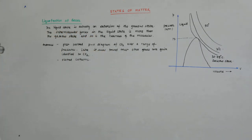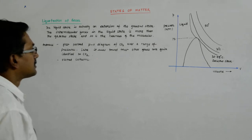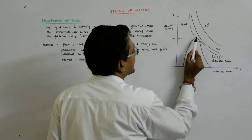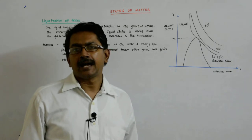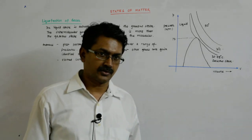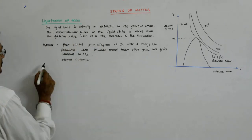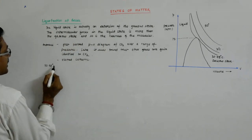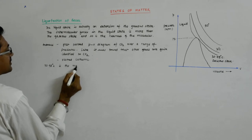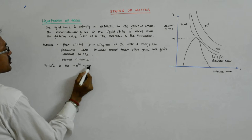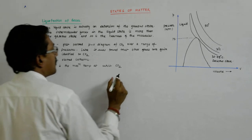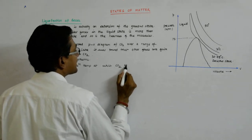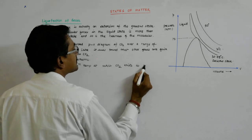Now what happens? This is the maximum temperature at which you have liquid carbon dioxide. So 30.98 degrees centigrade is the maximum temperature at which CO2 exists as liquid.